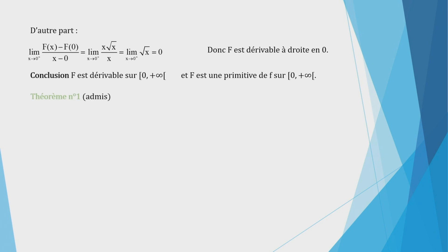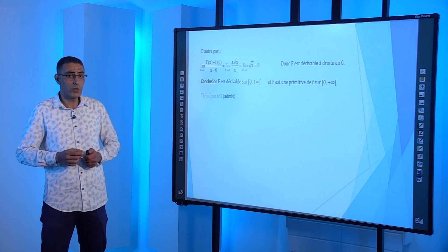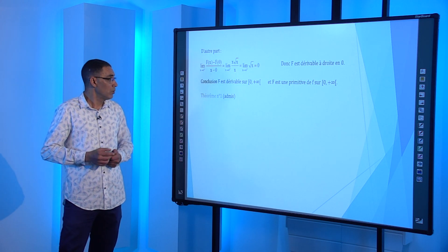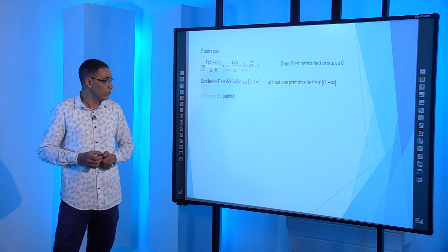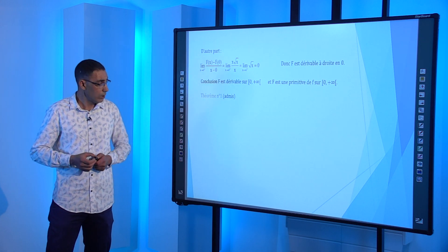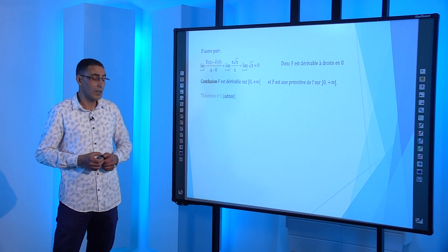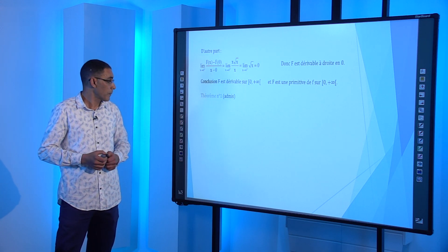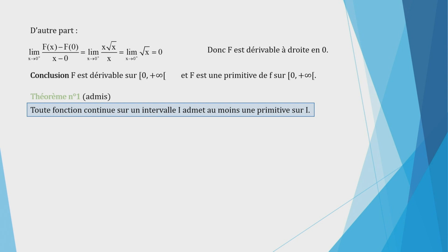Passons maintenant à un théorème. La question qui se pose : est-ce que toutes les fonctions admettent des primitives ? C'est le premier théorème, admis : toute fonction continue sur un intervalle I admet au moins une primitive sur I. On va donc étudier uniquement les fonctions continues, qui admettent toujours au moins une primitive. La continuité doit être sur un intervalle I.